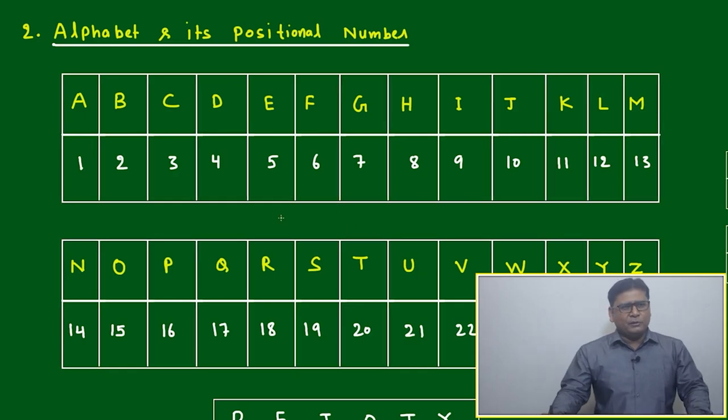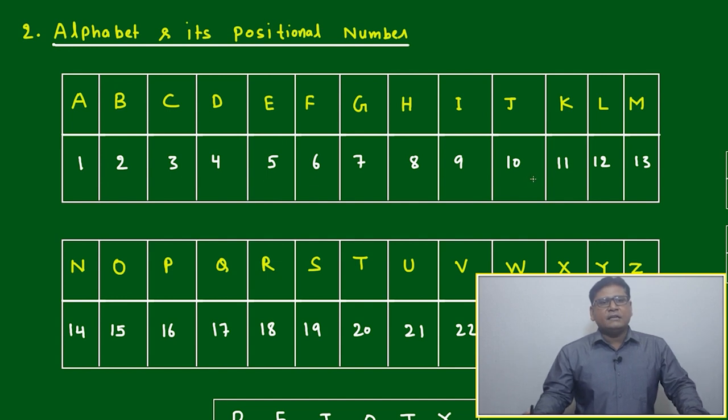Alphabet and its positional number - everyone already knows this is not a big thing. We just have to keep in mind these positions: A represents 1, B represents 2, C represents 3, D represents 4, and so on. If you remember a few milestone alphabets in between, correlation will be easy.